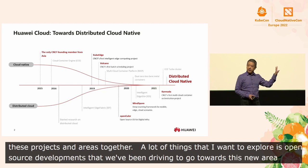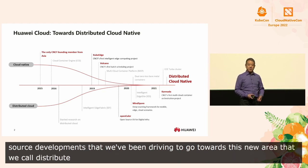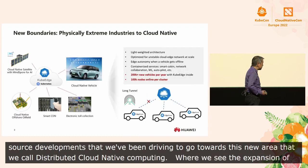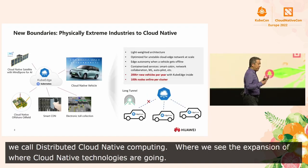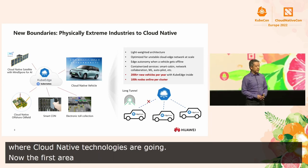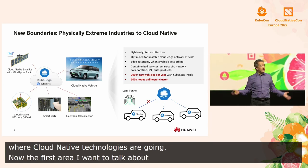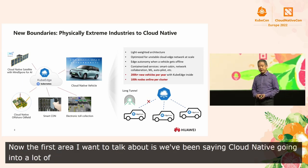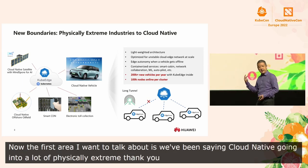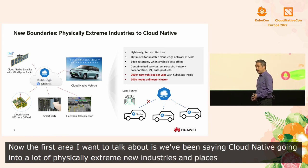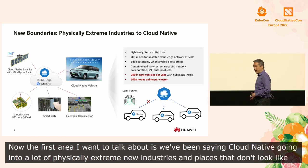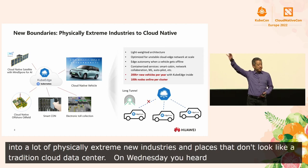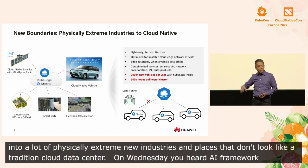There are three different areas I want to focus on in terms of where we see the expansion of cloud native technologies. The first area I want to talk about is cloud native going into a lot of physically extreme new industries — places that don't look anything like a traditional cloud data center. In the earlier keynote on Wednesday, you heard about how we've been doing things like taking AI frameworks such as MindSpore and putting them into space and satellites with Kubernetes.